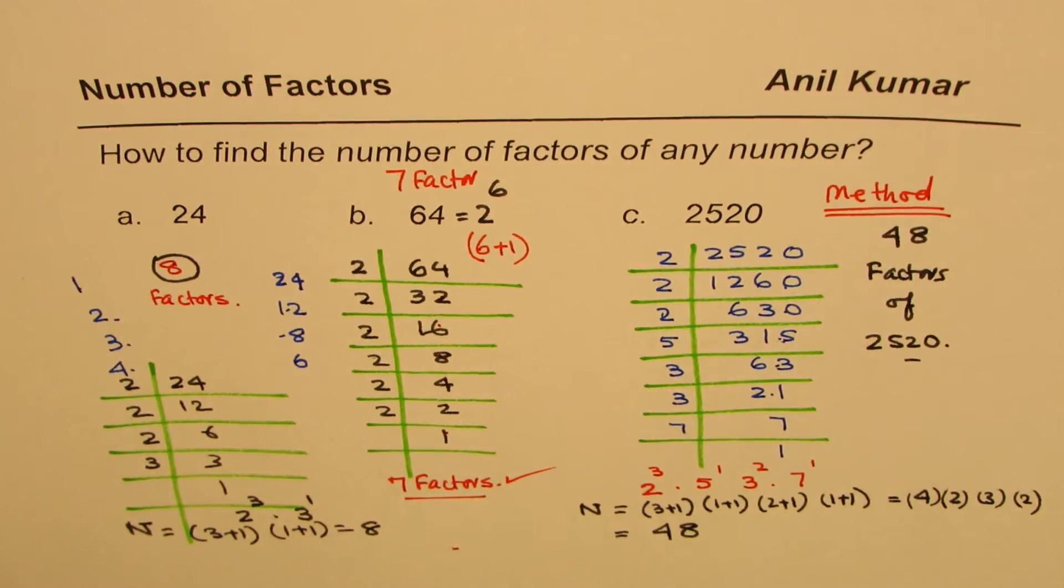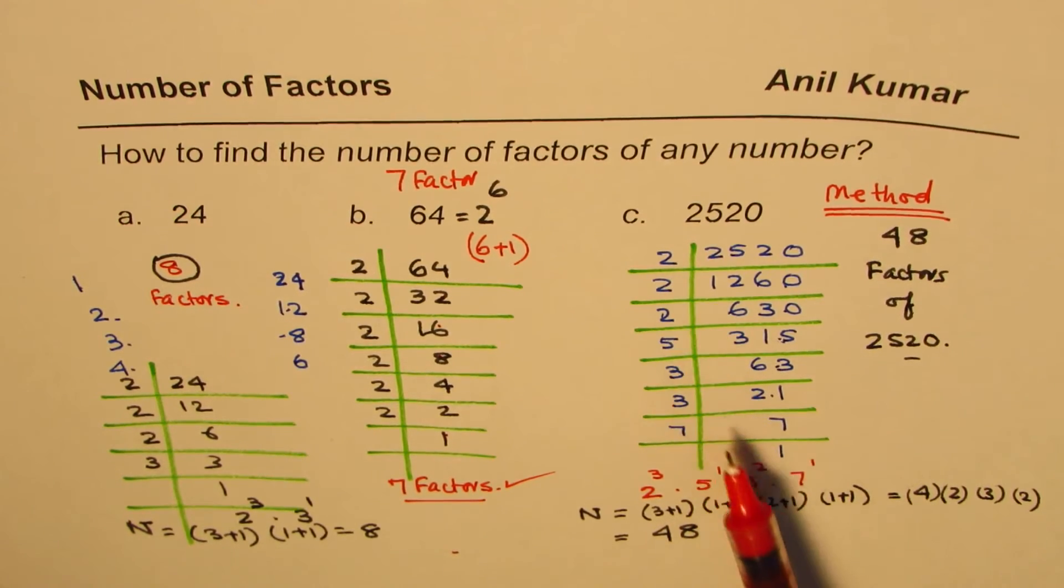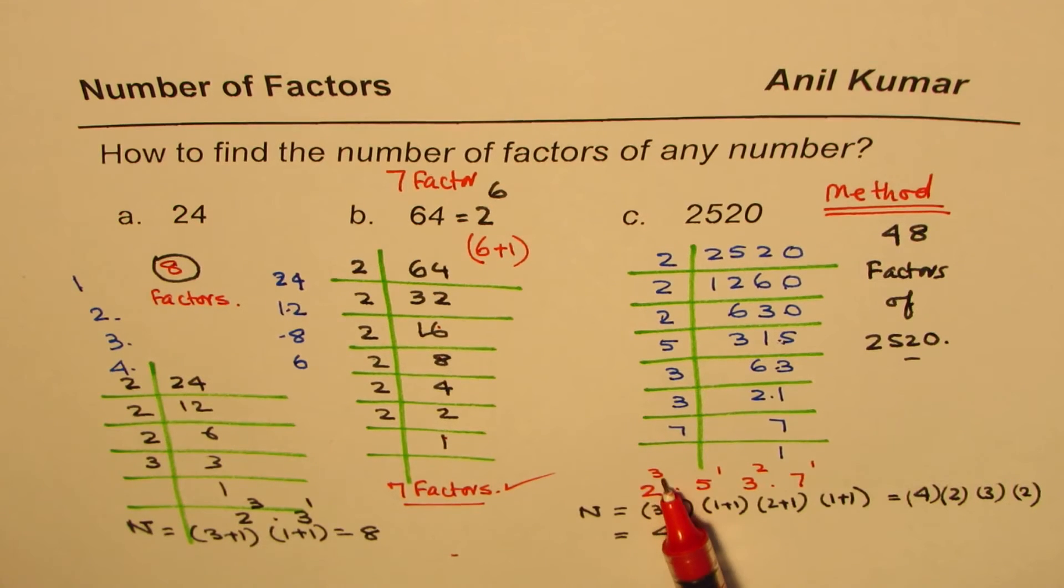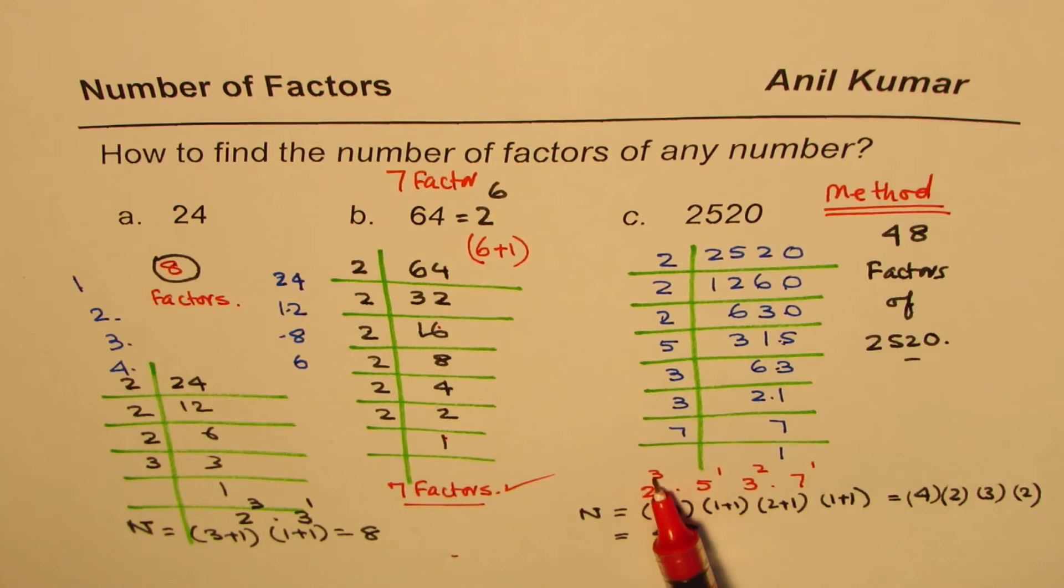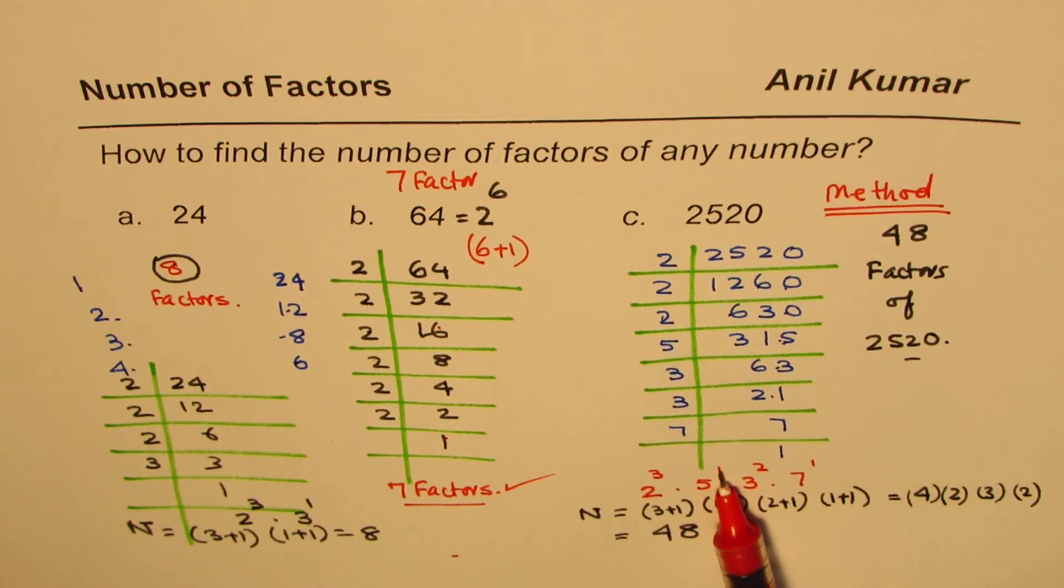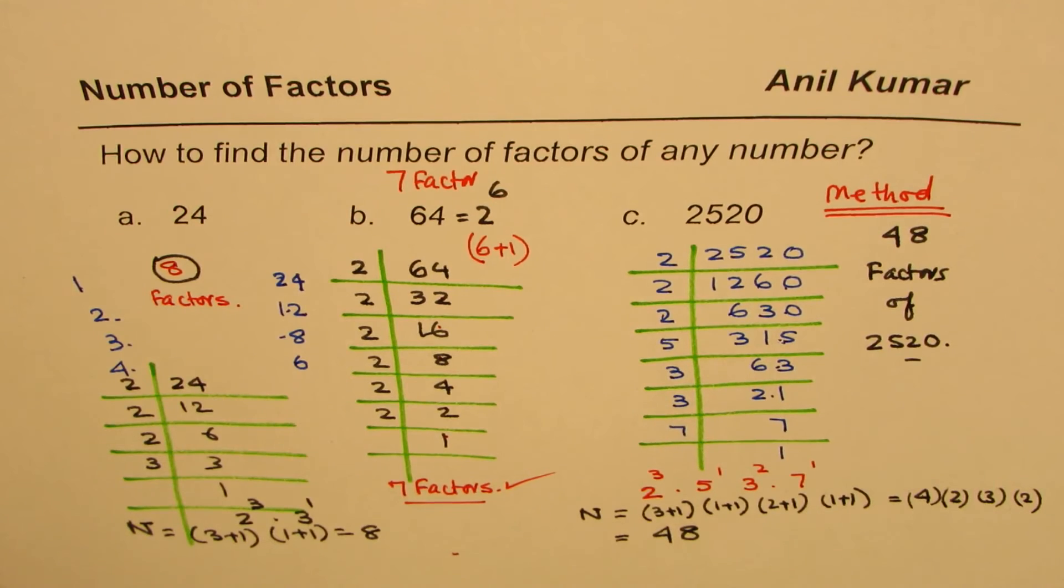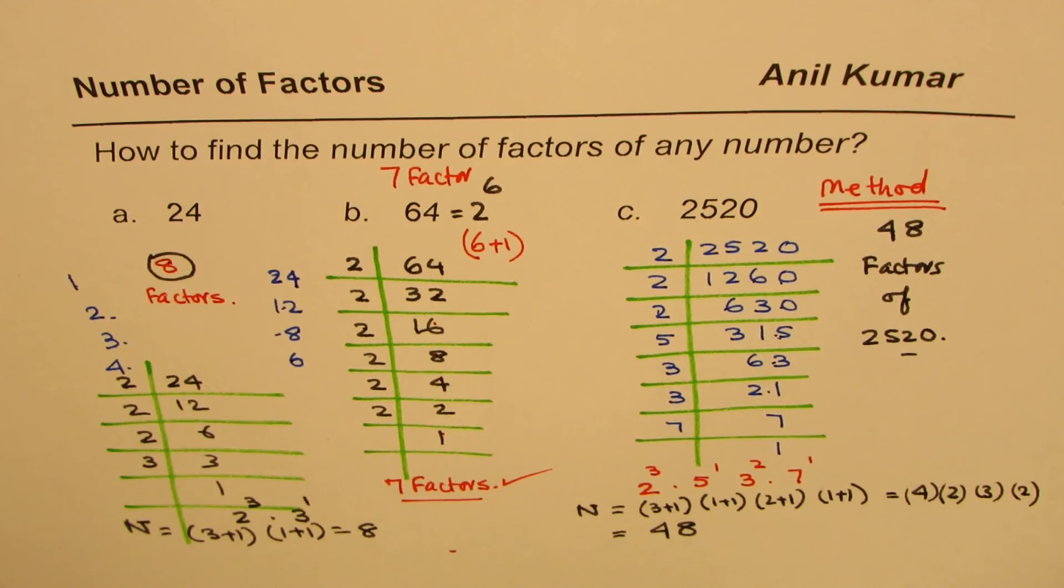So, we have found a rule which is just to prime factorization. List all the factors with their occurrence. How many times? As an exponent. And product of 1 plus exponent of each. 3 plus 1 times 1 plus 1 times 2 plus 1 times 1 plus 1 gives you total number of factors for that number. Do you get an idea? So likewise, you could try with some numbers and see if it works.